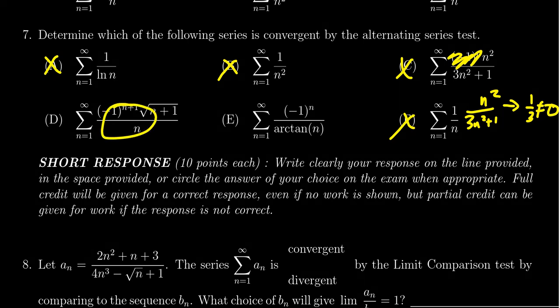With option D, if you ignore the alternating factor, is that thing decreasing towards zero? Well, the top is approximately the square root of n, the bottom is n itself, so this sequence - I'm not talking about the series, we have to analyze the sequence to know the convergence of the series - this thing is approximately one over the square root of n.